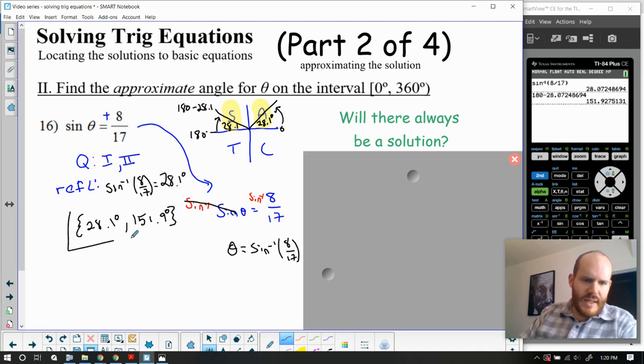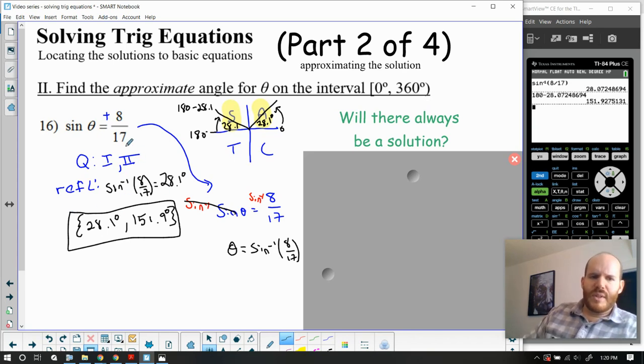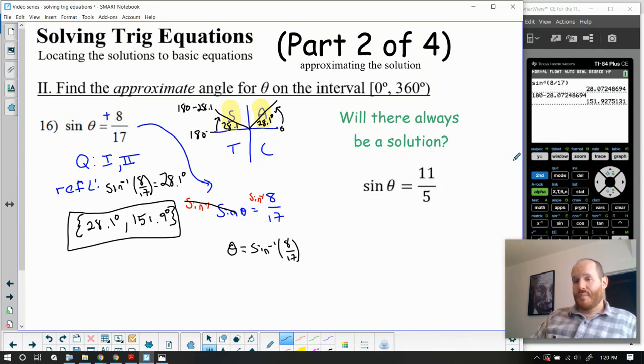And just as we did in the last video, we've gotten our two solutions, our quadrant one and our quadrant two answer. The added wrinkle was figuring out the angle when it's not one of the special angles we know. But we were able to do that using the inverse feature. So something else that you should consider is, will there always be a solution to one of these trig equations? And the answer, unfortunately, is no.